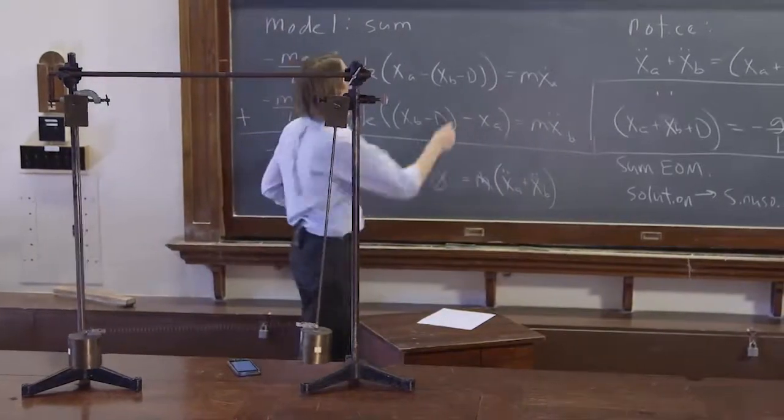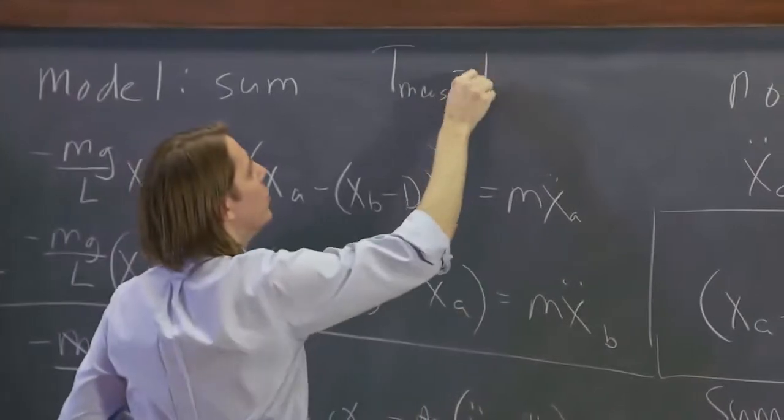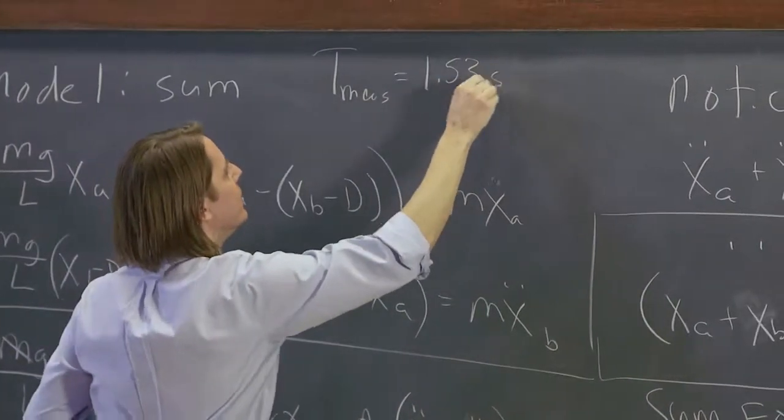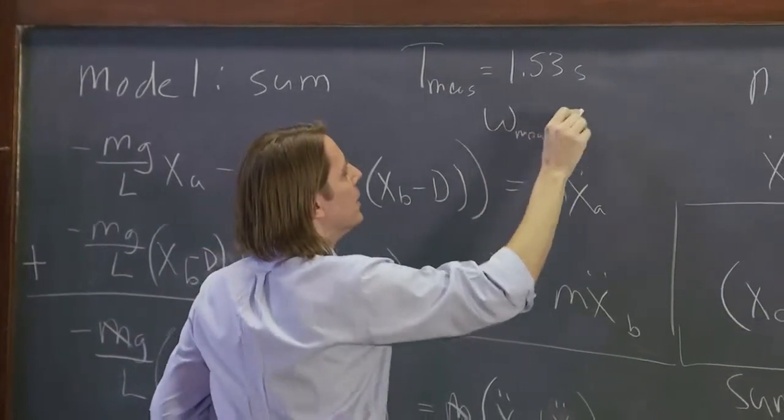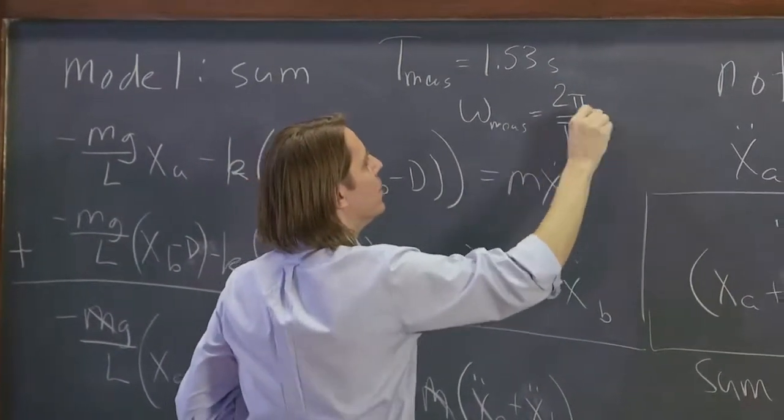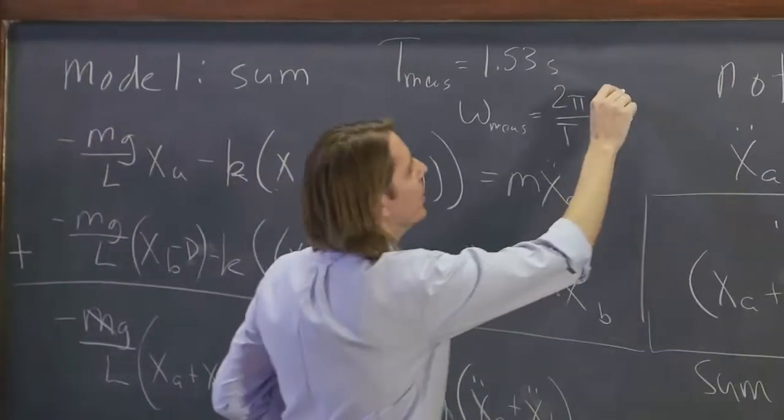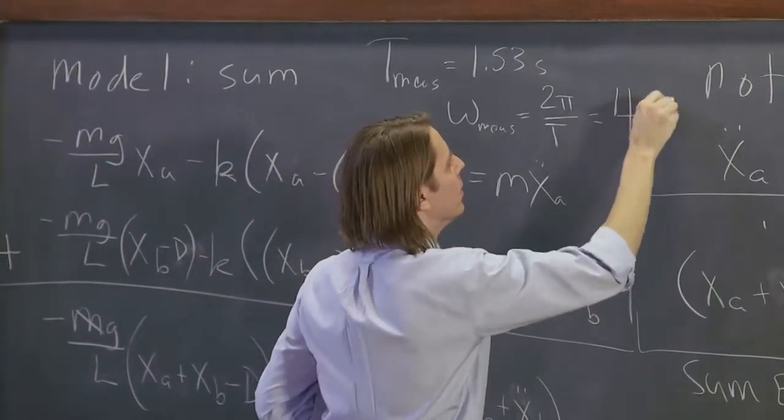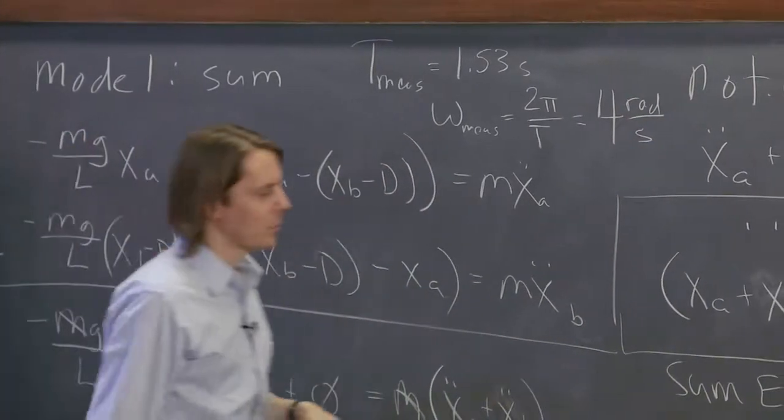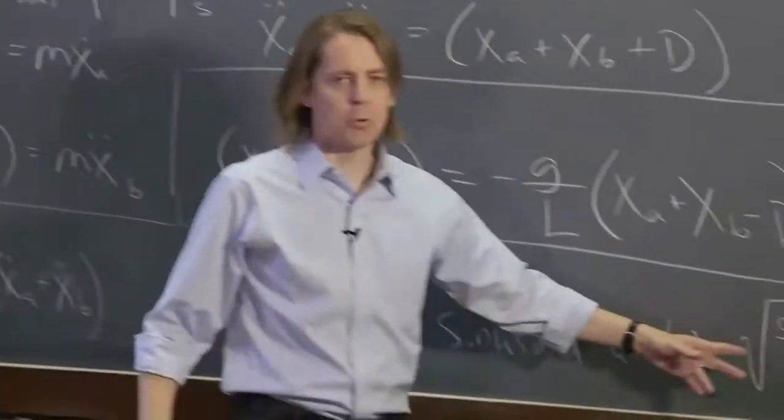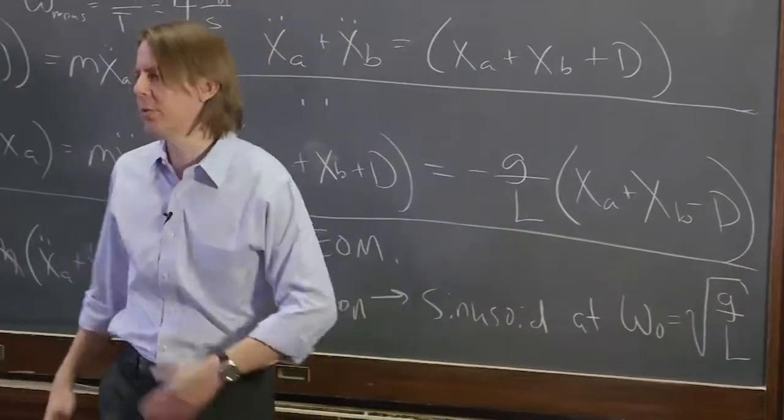So 10 periods was 15.3 seconds. So the period that I measure is 1.53 seconds. And the omega that I measure is 2 pi over the period, and that comes out to about 4 radians per second. So we measured about 4 radians per second. Well, guess what? Square root of g over L is about 4 radians per second. 9.8 over 0.6 is about 16. Square root of 16 is about 4.